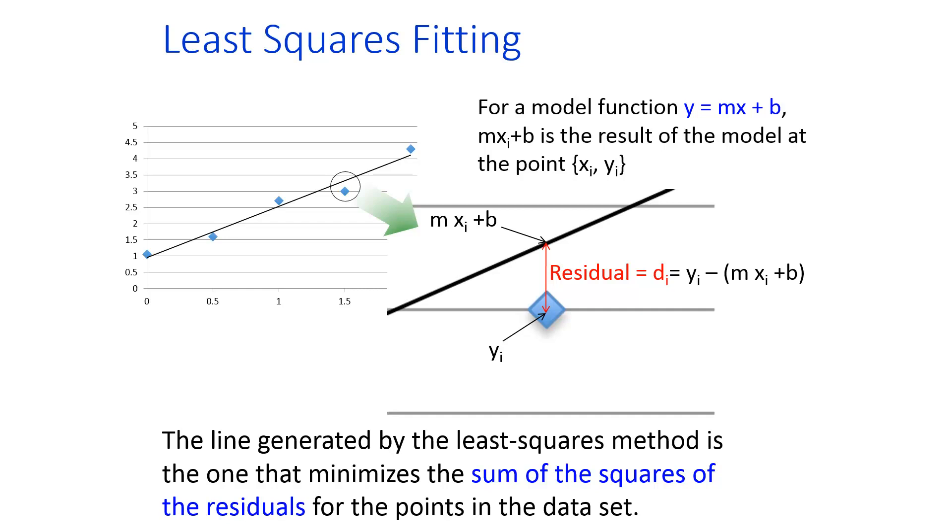Some points may be farther from the line than others, and that's okay. What matters is the total distance of all the points from the line. And what you do is you take the residuals, you square them because they can be positive or negative, and then you move the line around until the total sum of all those squares is minimized.